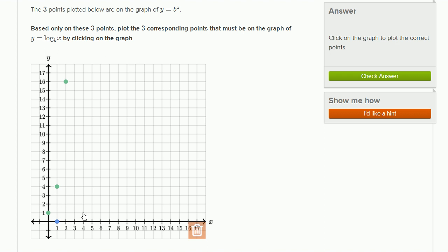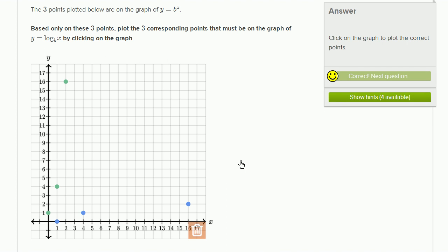Here x is 1, y is 4. That corresponds to (4, 1). Here x is 2, y is 16. That corresponds to (16, 2). And we got it right.